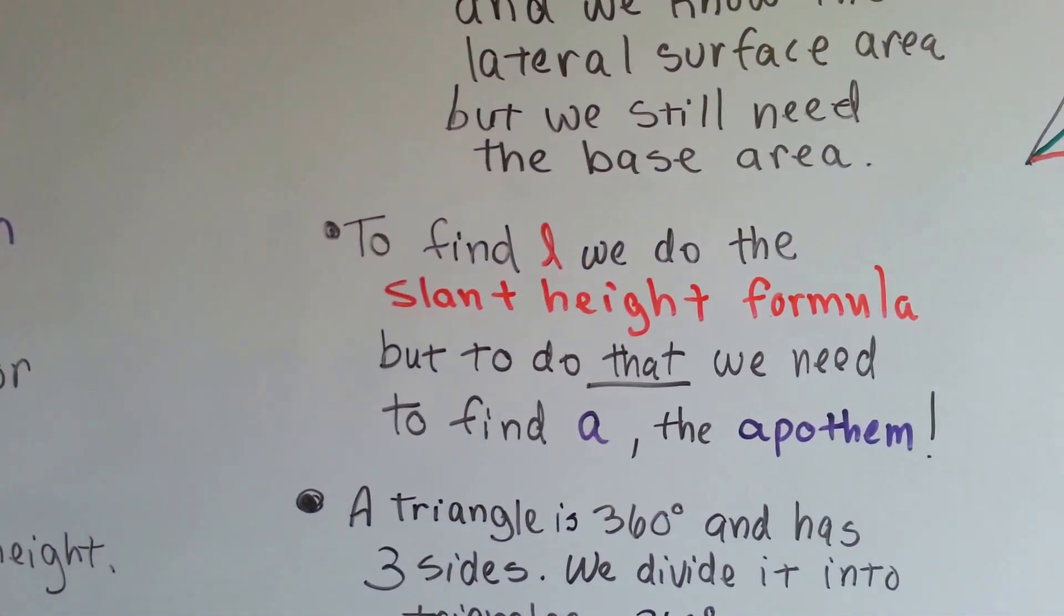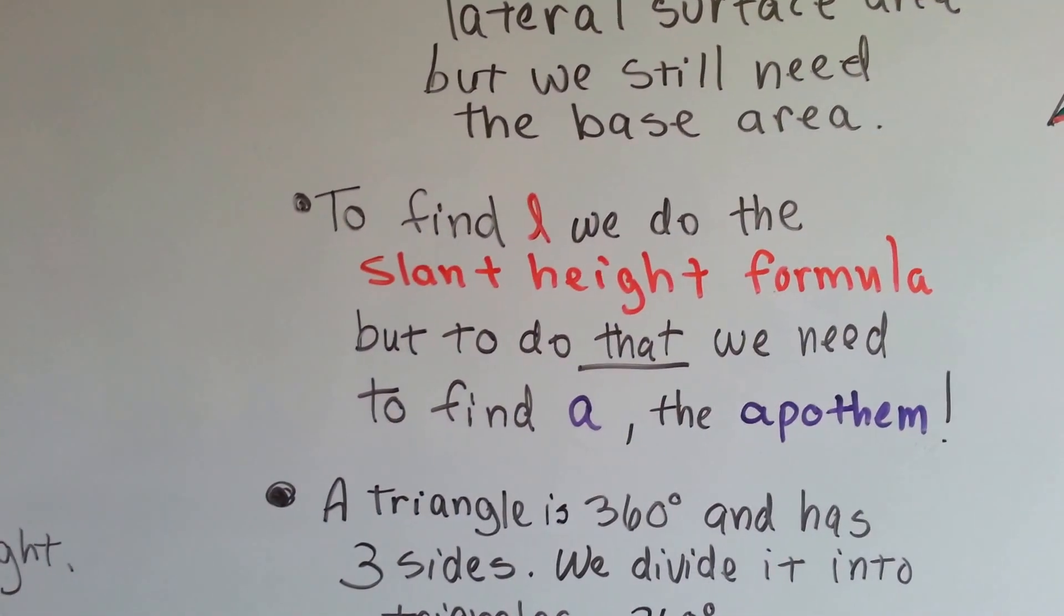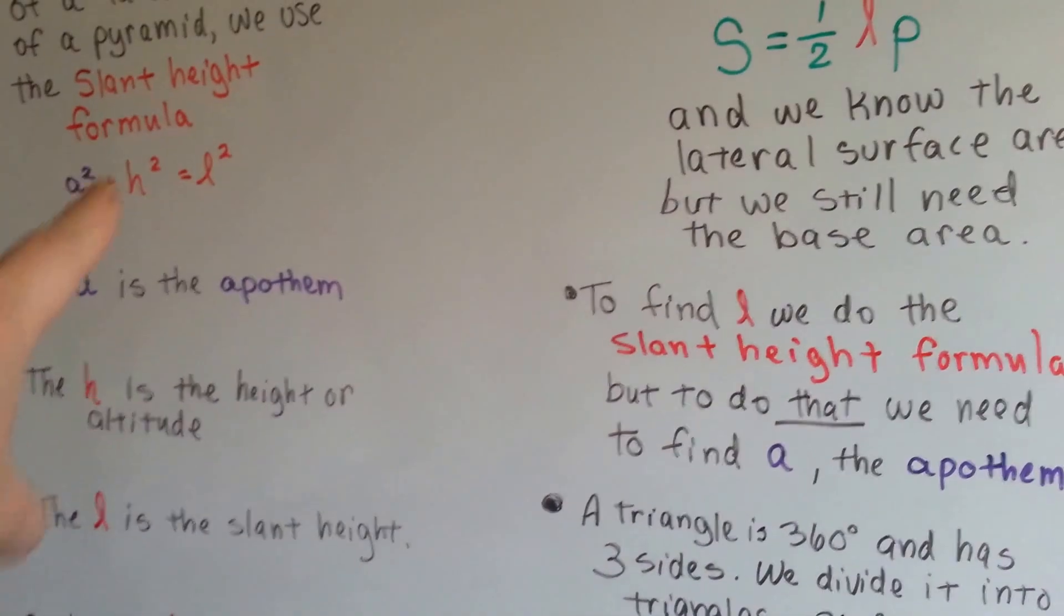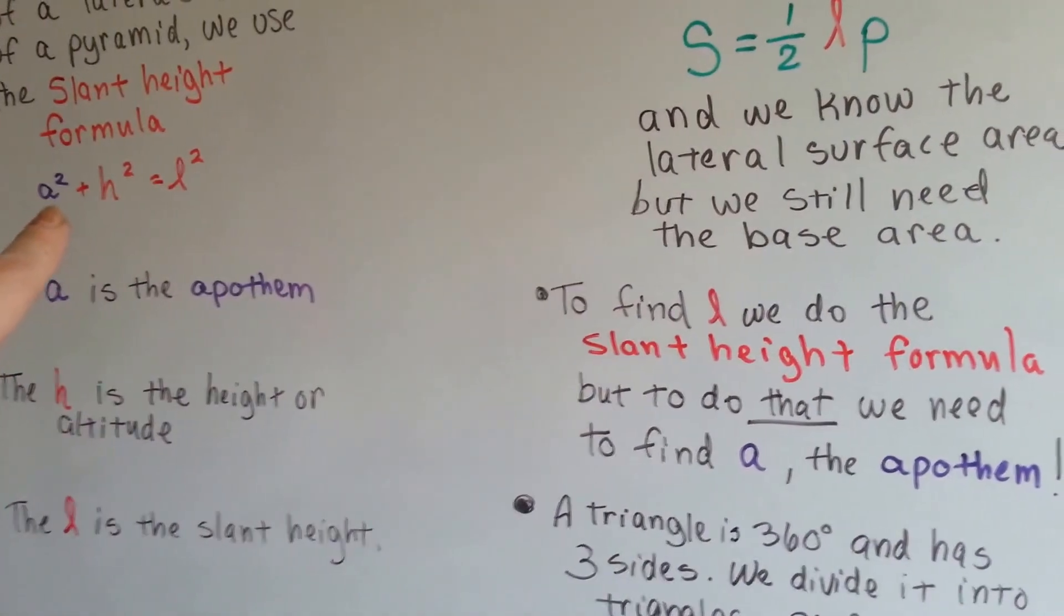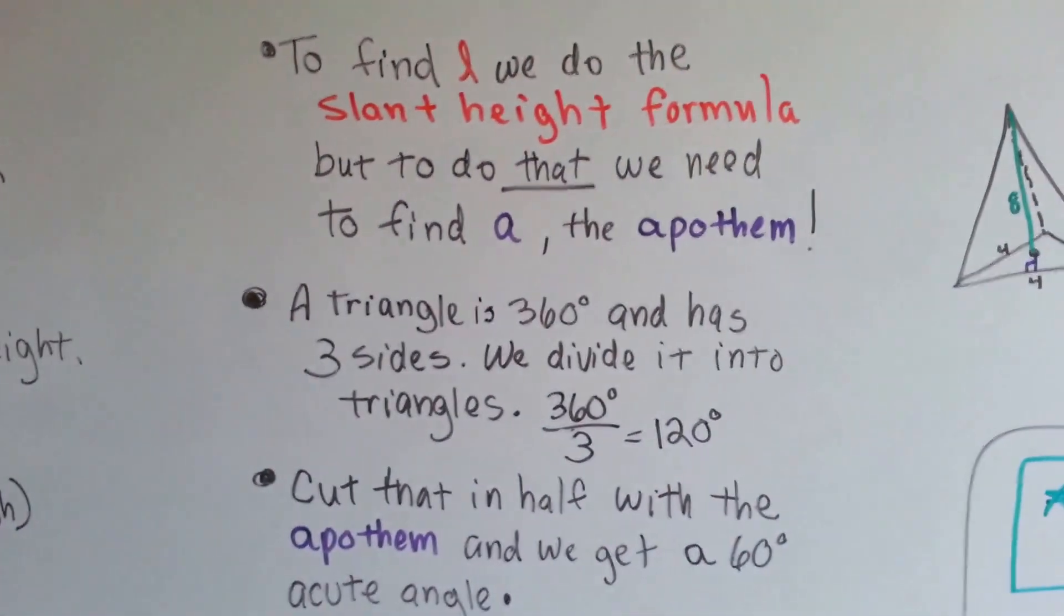Well, to find the slant height, we need to do the slant height formula. But before we do that, we need to find a, the apothem. So we can't even do the slant height formula unless you have the apothem. Now if you've got it, go ahead, start doing the formula. If you don't, this is what we need to do.